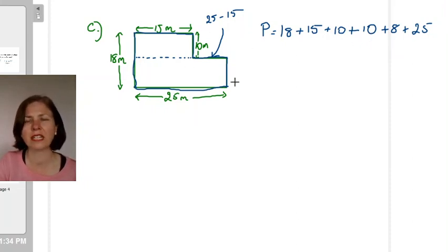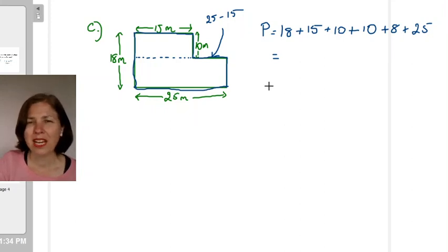And then one last side is this one along here and it's 25. Now once again it's really important that you write this down in your working. Don't just try and add them up around the rectangle because your working shows the method that you used and it shows which numbers you added together.